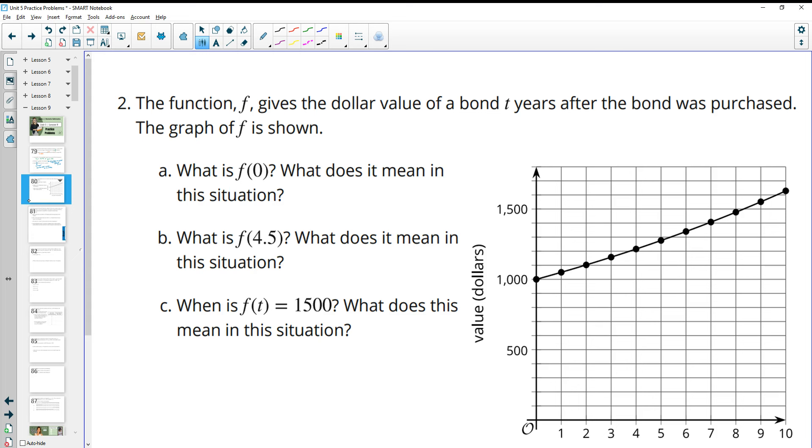Number two, the function F gives the dollar value of a bond. So this is something that you put in the bank, you can buy this, and they'll give you more money back a certain number of years after it was purchased. The graph of F is shown. So what is F of 0? That's where we look on this vertical axis. F of 0 here is $1,000. And this would be the initial cost or how much you purchased the bond for, the purchase price. So you bought the bond for $1,000.